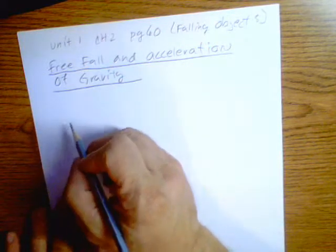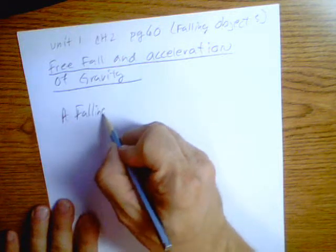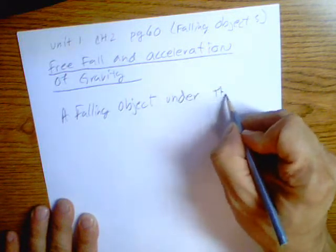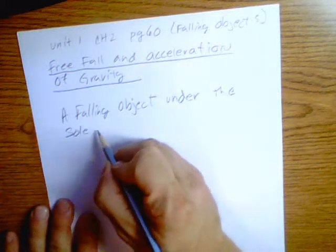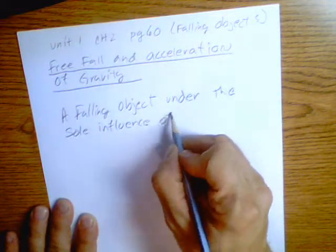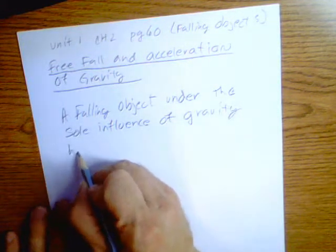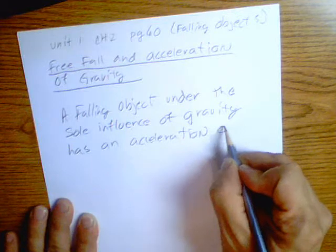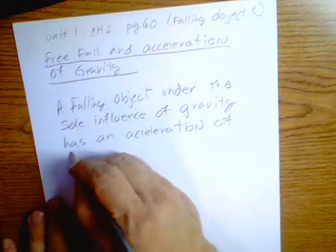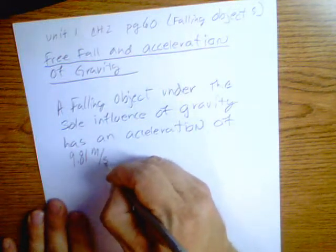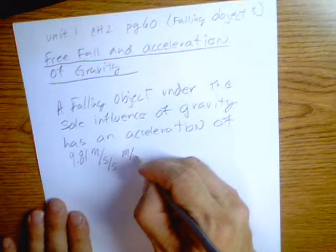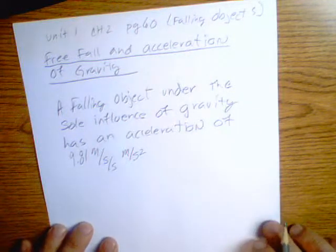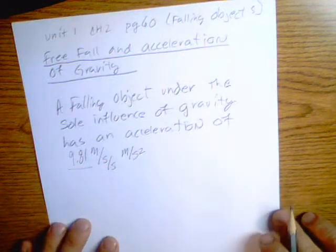A falling object under the sole influence of gravity has an acceleration of 9.81 meters per second per second, and we refer to that as meters per second squared. We know those units for acceleration. That's a number that is going to have to be put to memory. We're going to use that quite a bit.